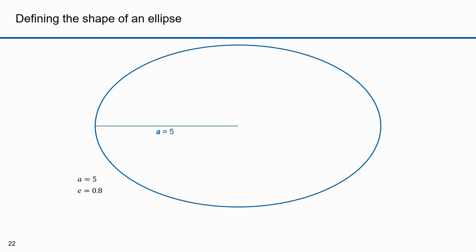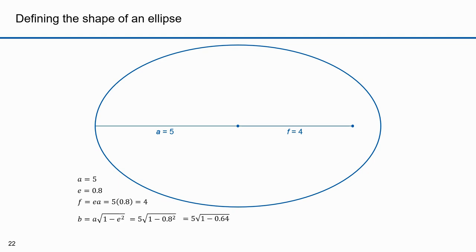Here are some simple calculations. This ellipse has a semi-major axis of 5 and an eccentricity of 0.8. f = e × a = 5 × 0.8 = 4. b = a√(1 − e²) = 5 × √(1 − 0.64) = 5 × √0.36 = 5 × 0.6 = 3. From that we know the length of the semi-minor axis. We've now fully characterized this ellipse from just the two terms: semi-major axis and eccentricity.